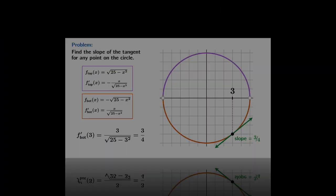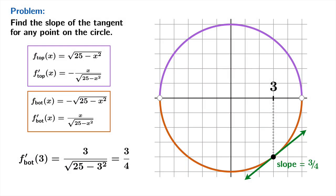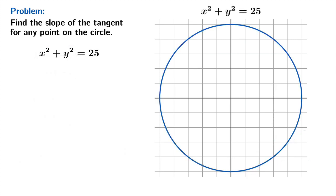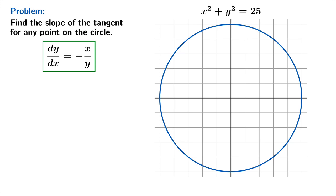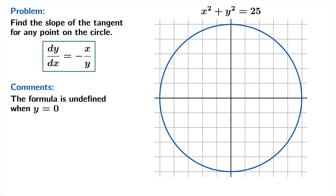Now back to the original circle example. Armed with implicit differentiation, we take the derivative of x² + y² = 25 with respect to x and get 2x + 2y(dy/dx) = 0. Solving for dy/dx gives dy/dx = −x/y — a single formula for the tangent slope at any point on the circle, except when y = 0, which are exactly the two points where we already knew the slope was undefined.